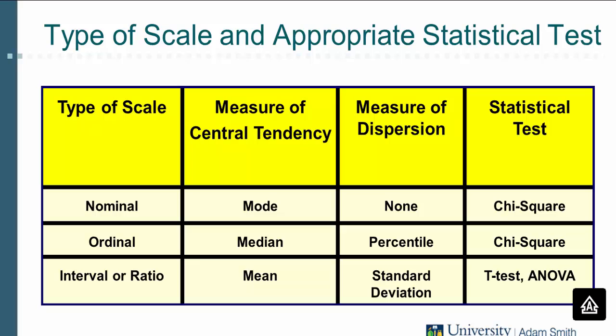The best scales are interval or ratio scales. If you use nominal or ordinal data, you will be very much limited in the type of analysis you can carry out. Importantly, you cannot change the scale once your data is collected — that is, you cannot enrich a nominal or ordinal scale.